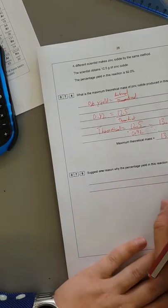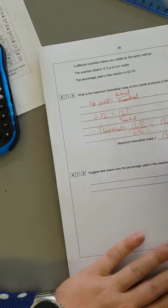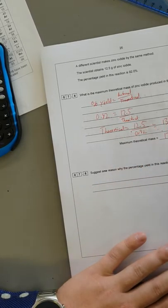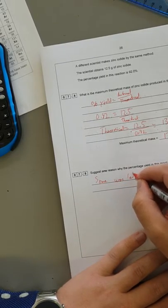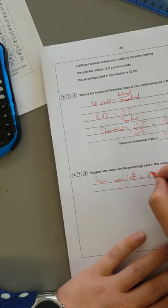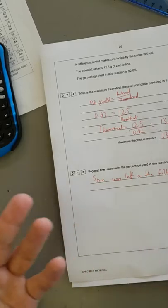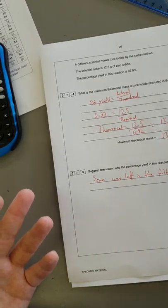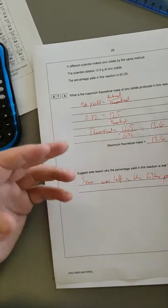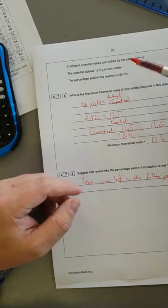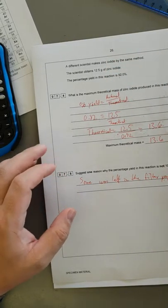Just one reason why the percentage yield is not 100%. So either you didn't actually react to all of the iodine, or some was left in the filter paper. The filter paper is damp when you have done filtering it. It does absorb some of the water, so of course it's going to absorb some of the salt, or I guess ethanol in this case. It's still going to absorb some of this metal compound in the filter paper.